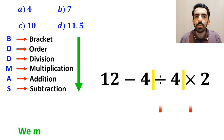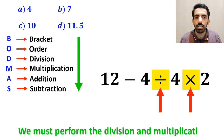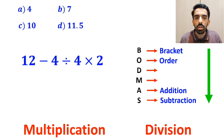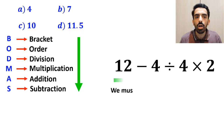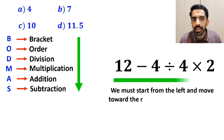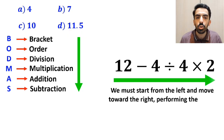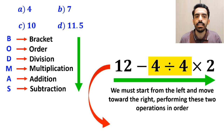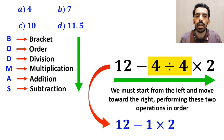Then we must perform the division and multiplication. However, it's very important to understand that in the BODMAS rule, multiplication and division have the same level of priority. In this situation, we must start from the left and move toward the right, performing these two operations in order. So first we do the division between the two fours, and this expression simplifies to 12 minus 1 times 2.